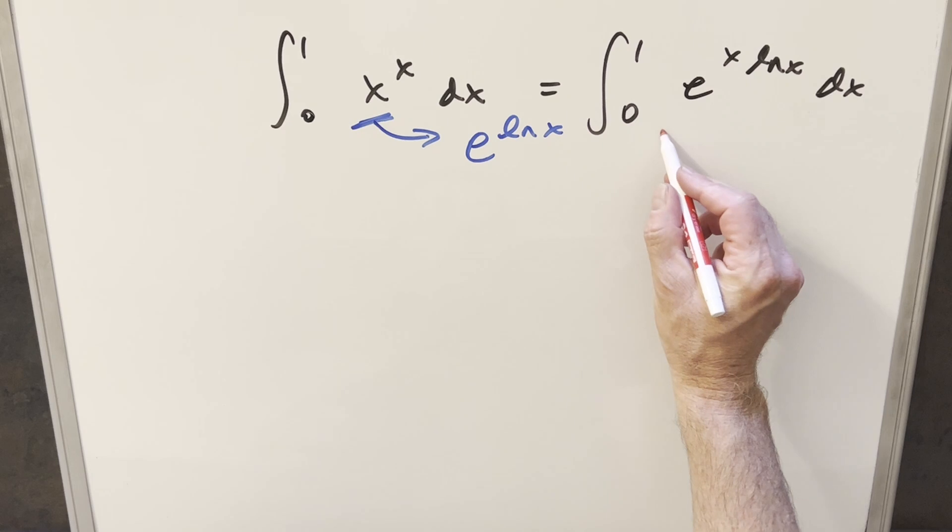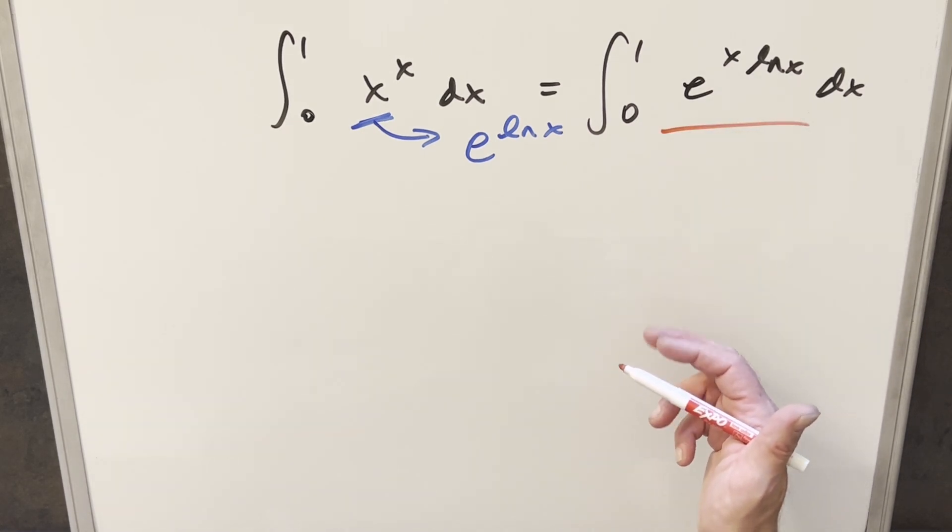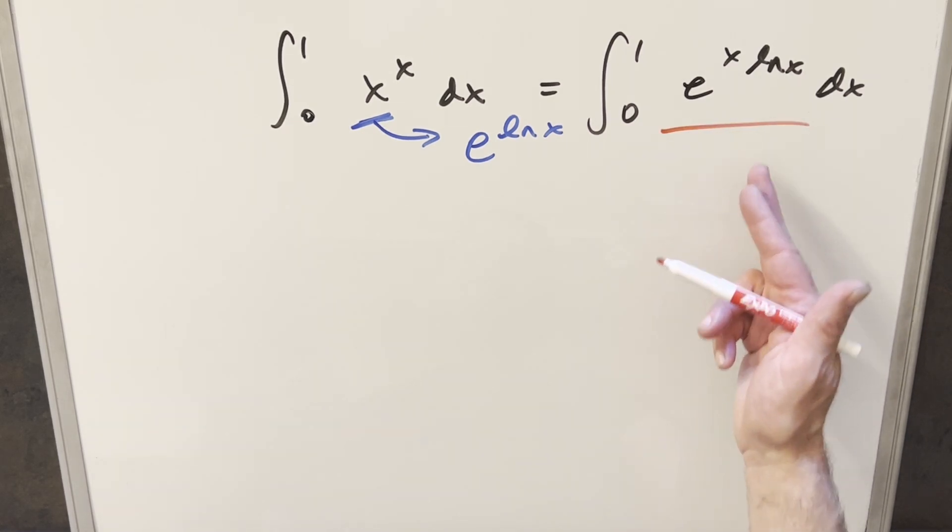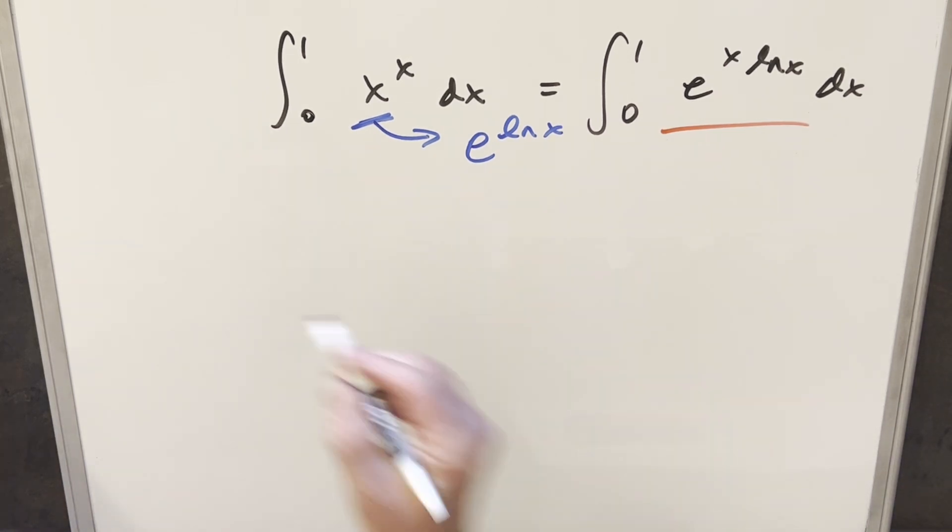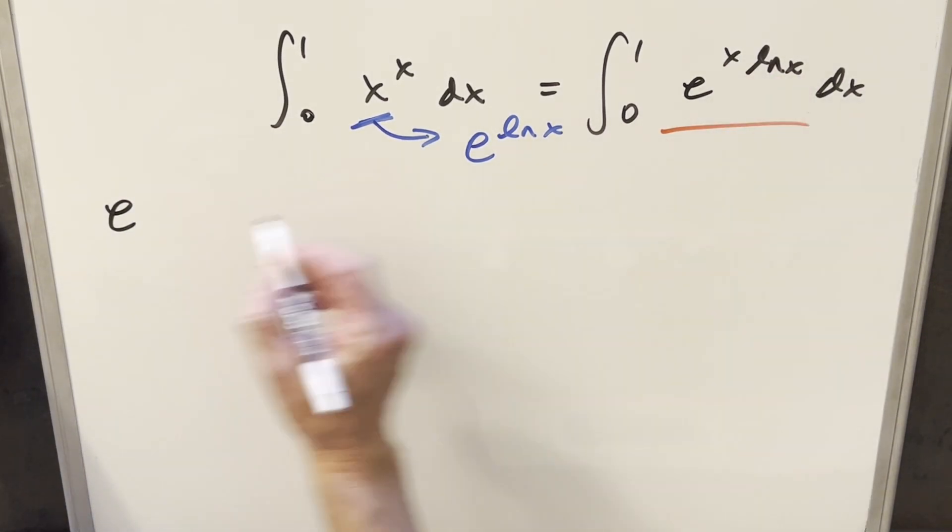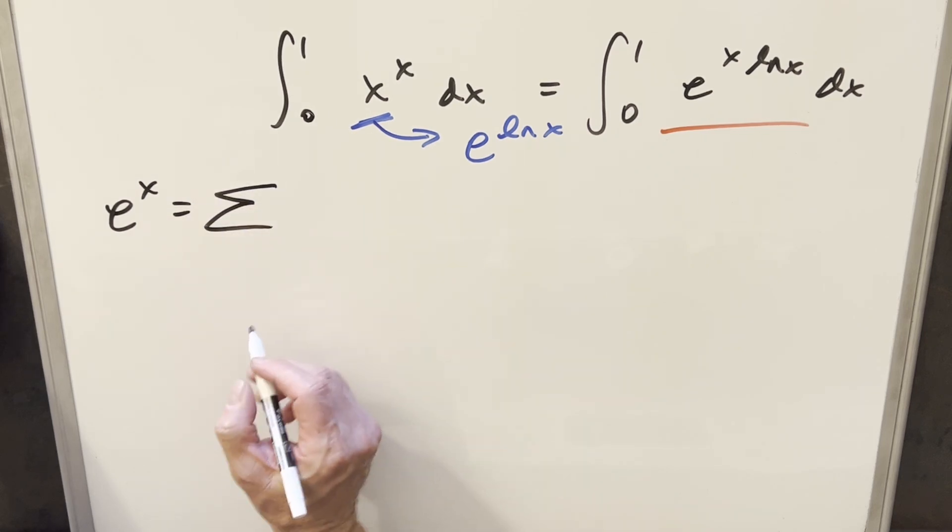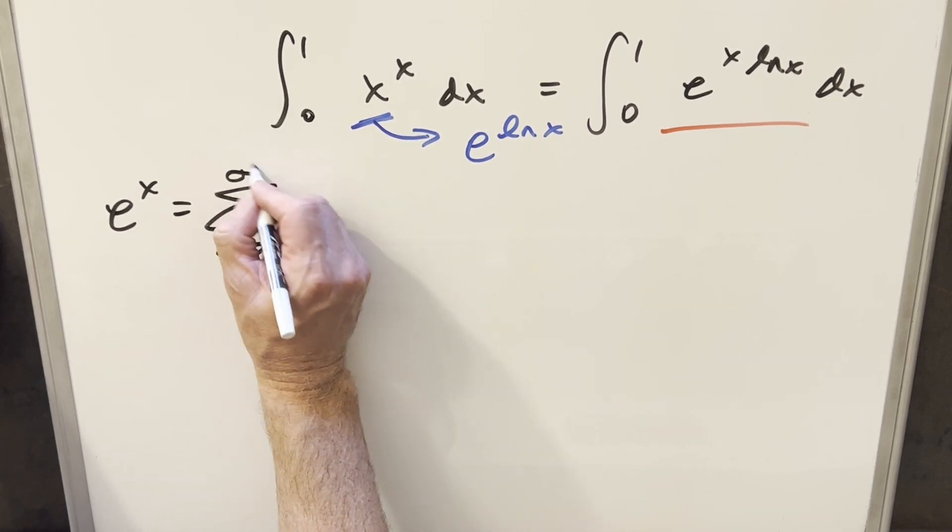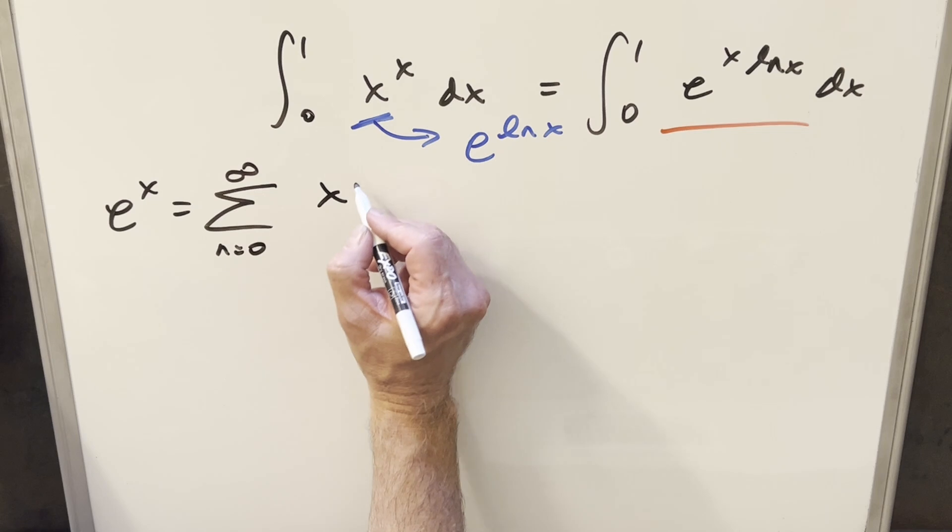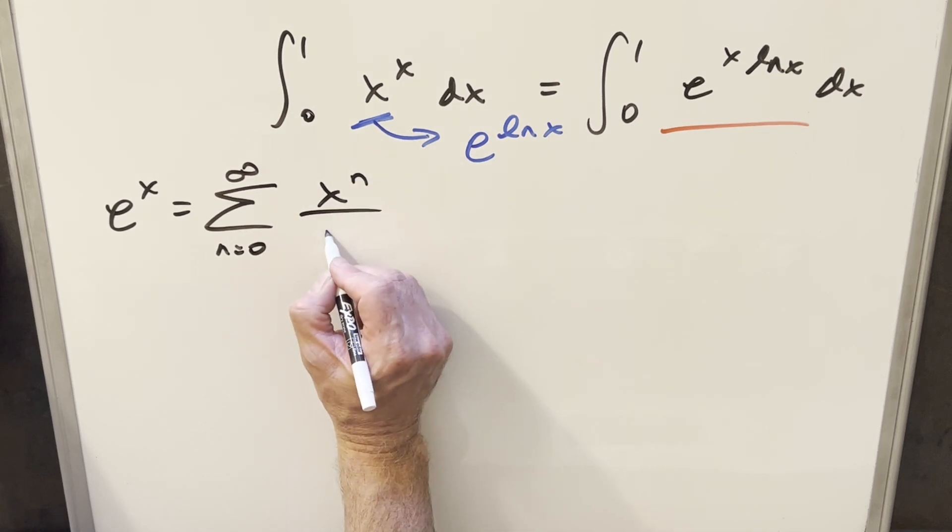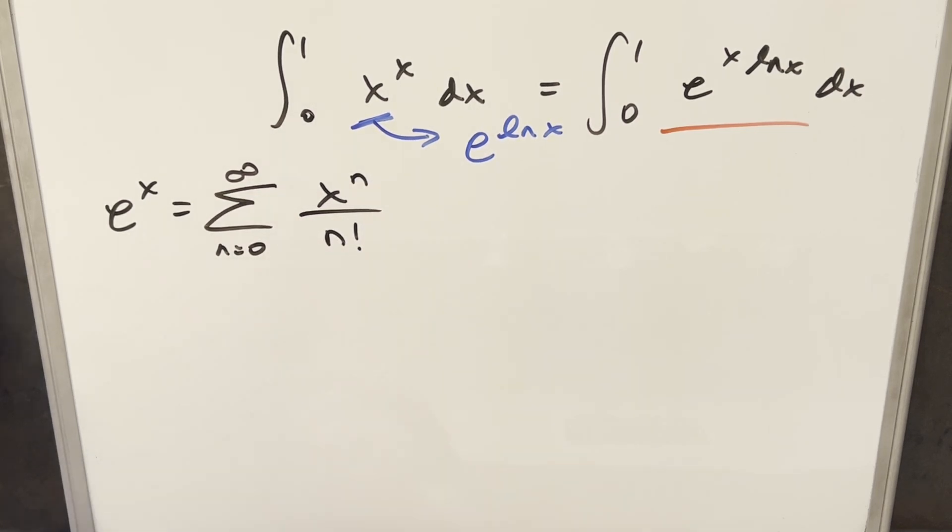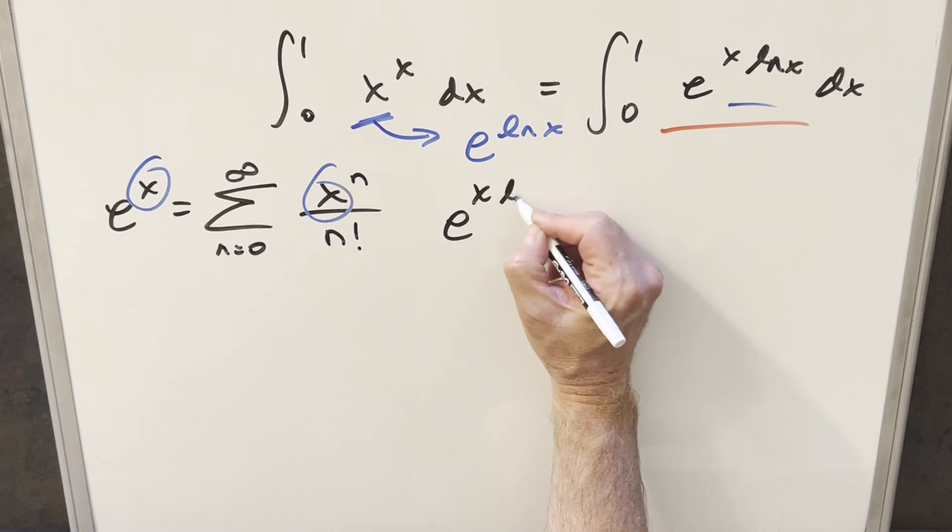But now here, this is kind of hard to deal with because it's not just e to the x. We can't really just do the normal thing on this. So what I want to do actually is use power series on this because we know that we can take for just e to the x, the power series for this is going to be the sum from n equals 0 to infinity, similar to like geometric series, but we have n factorial in the denominator here.